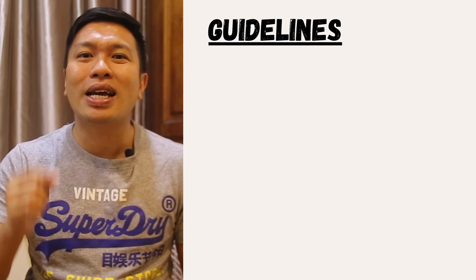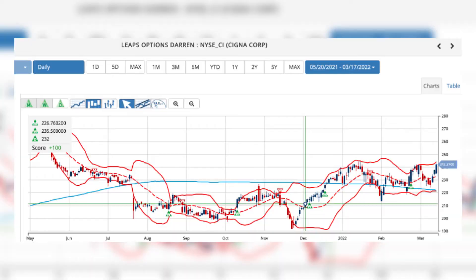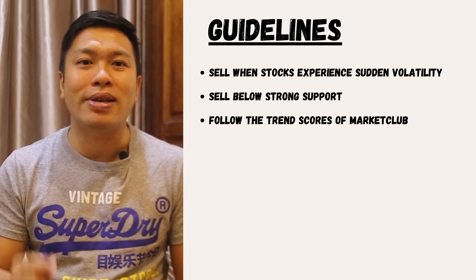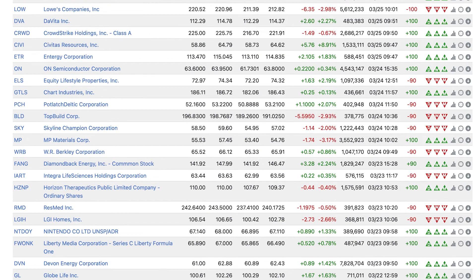Normally, when it comes to spreads, I like selling them when there is a lot of volatility in the market. This is because with high volatility comes higher option premium. I also like selling puts below strong support. I also like using my screener Market Club to give me the trend scores of a trade, which will determine how aggressive my trades should be.